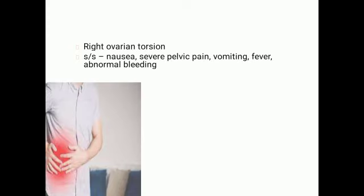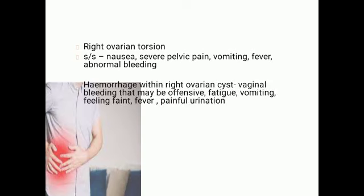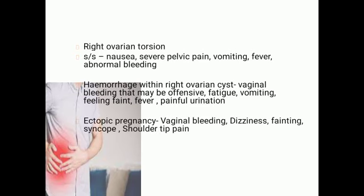Moving on to the right ovary and right fallopian tube: right ovarian torsion may manifest as nausea, severe pelvic pain, vomiting, fever, and abnormal bleeding. Hemorrhage in the right ovarian cyst may present with vaginal bleeding that may be offensive, fatigue, vomiting, feeling faint, fever, and painful urination. Ectopic pregnancy is another common differential diagnosis, manifesting as vaginal bleeding, dizziness, fainting, syncope, and shoulder tip pain, which is a very characteristic symptom.